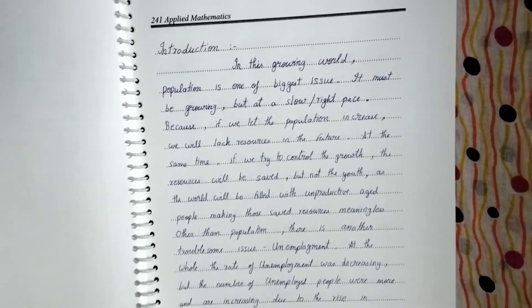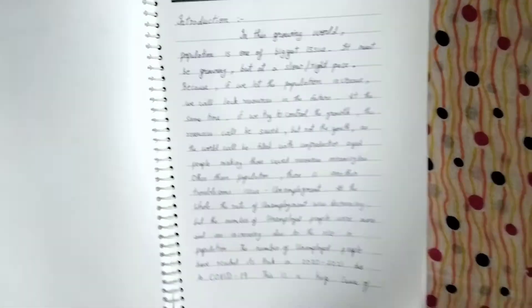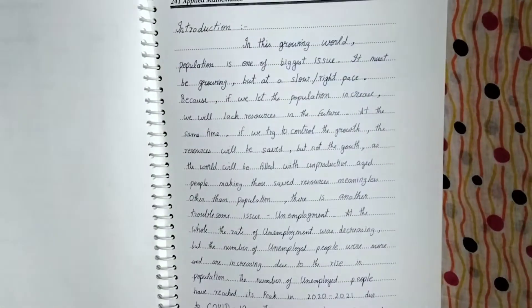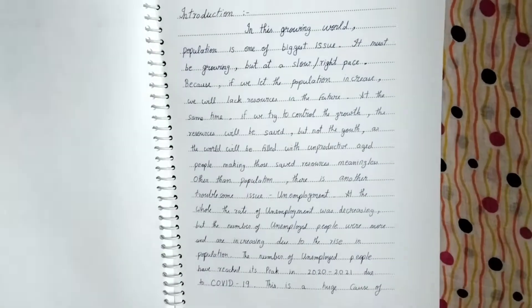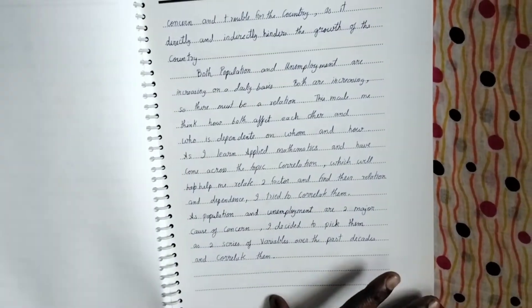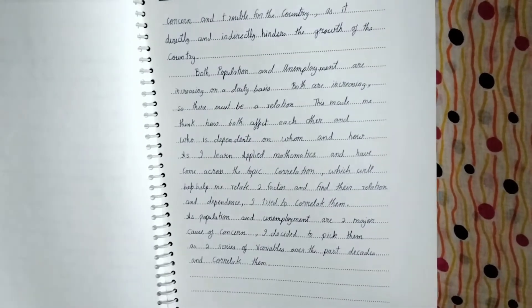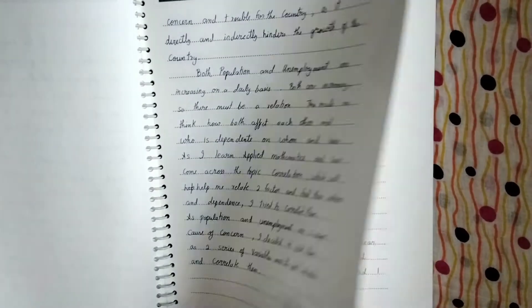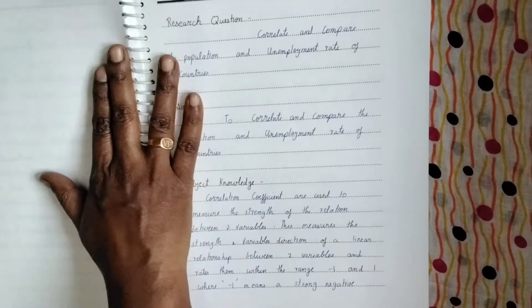And coming to the first page is given the introduction first. So in the introduction, he would have explained why he selected this topic. What made him select this topic. And why did he go for population and unemployment? What was his interest in it?